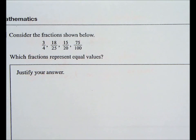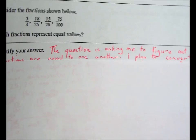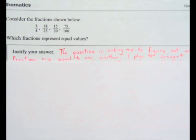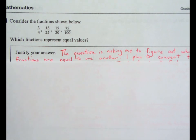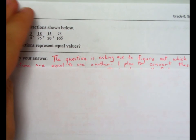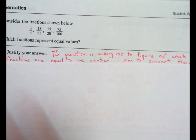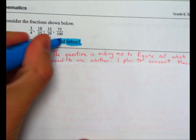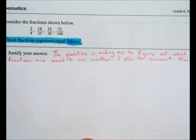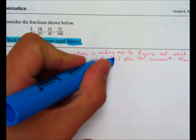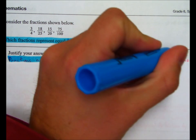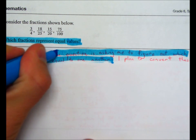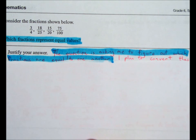So let's take a look at how you would solve this problem using the four-step model. After reading the question and making sure I understand the question, I can state that the question is asking me to figure out which fractions are equal to one another. I know that because right here, the question is that: Which fractions represent equal values? I'm going to highlight this part in blue because that is me showing my understanding of what the question is asking.